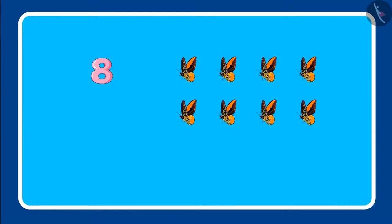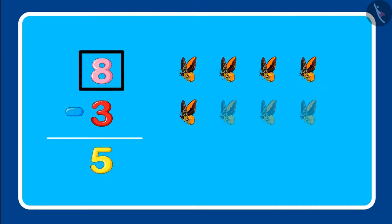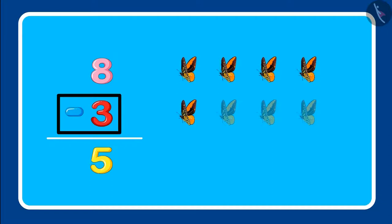Then three butterflies flew away, so below the total number we will put the subtraction sign and write the number that got reduced. Then we will write the remaining number, which is five butterflies. So children, from eight butterflies, three butterflies flew away, so five butterflies were left. You have understood, right?